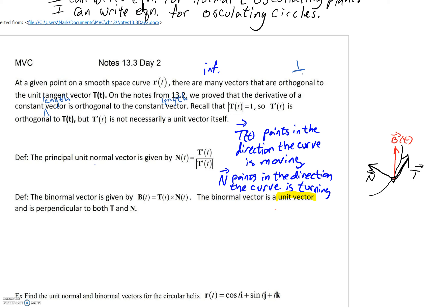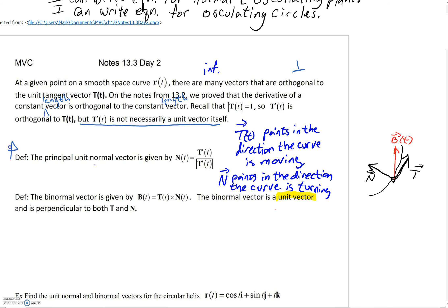A derivative of a constant length vector is orthogonal to that constant length vector. So if I took the length of the unit tangent vector, it's 1. T prime is orthogonal, but T prime is not necessarily a unit vector itself. So if you wanted to make it a unit vector, you'd divide by its length — and that's the definition of the principal normal unit vector: T prime over the length of T prime.